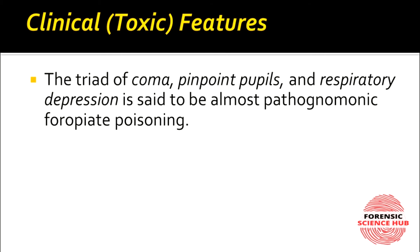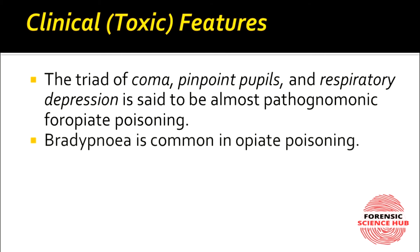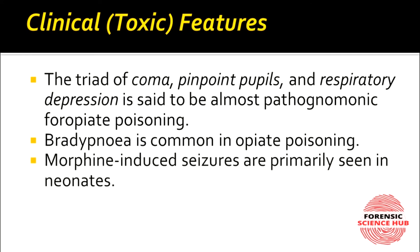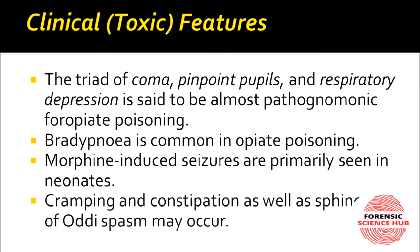The clinical features of opioid poisoning include a classic triad: coma, pinpoint pupils, and respiratory depression. Bradypnea is a common feature. Morphine-induced seizures may also be seen, along with cramping, constipation, and spasm of the sphincter of Oddi.